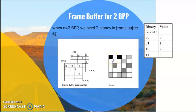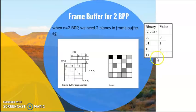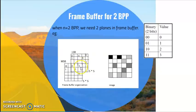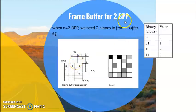For the first pixel which is black, the color code is 00 — MSB bit is 0, LSB bit is 0, and that is how we put the information in the frame buffer. For a white pixel, the color code is 3 and binary is 11, so its location stores a 1 in both planes. For a lighter gray, the color code is 2 and binary is 10 — so we store 1 and 0. For a dark gray, the value is 1 and binary is 01 — located at third row, second column, we store a 0 in the MSB plane and a 1 in the LSB plane. This is the frame buffer organization for two bits per pixel.